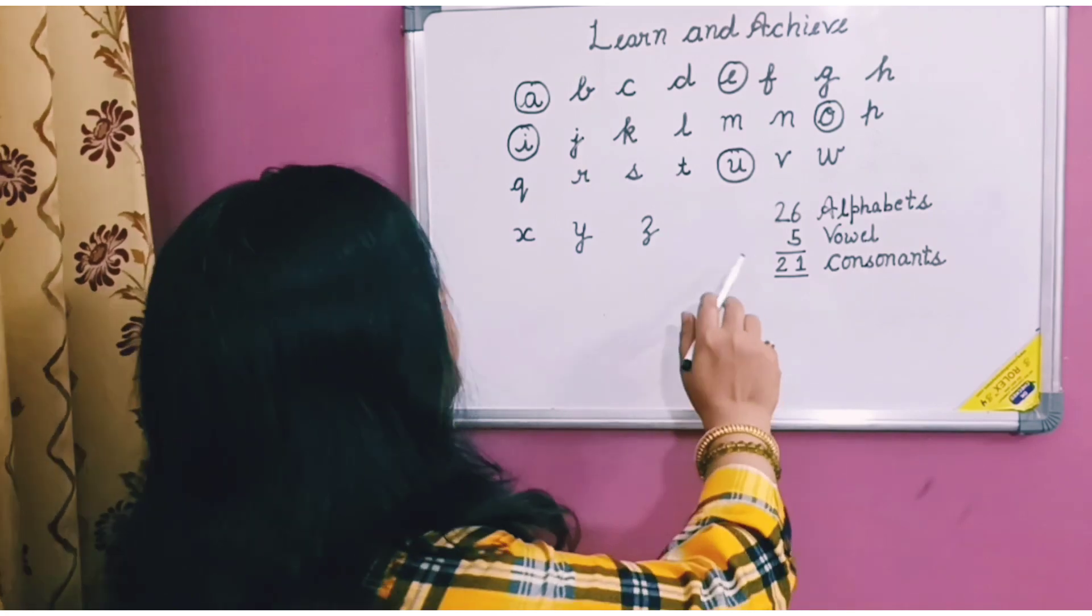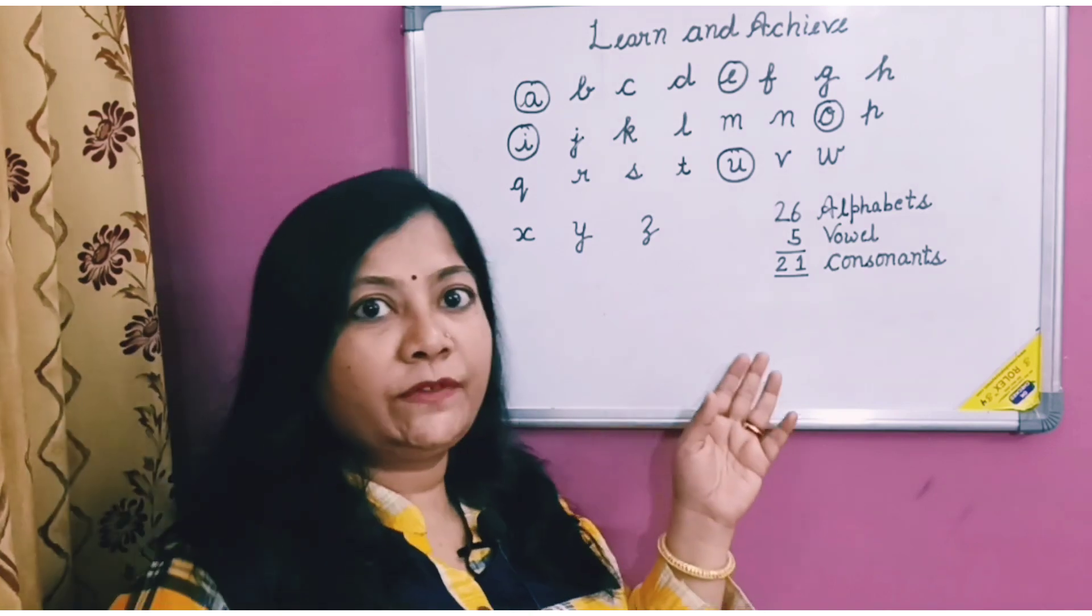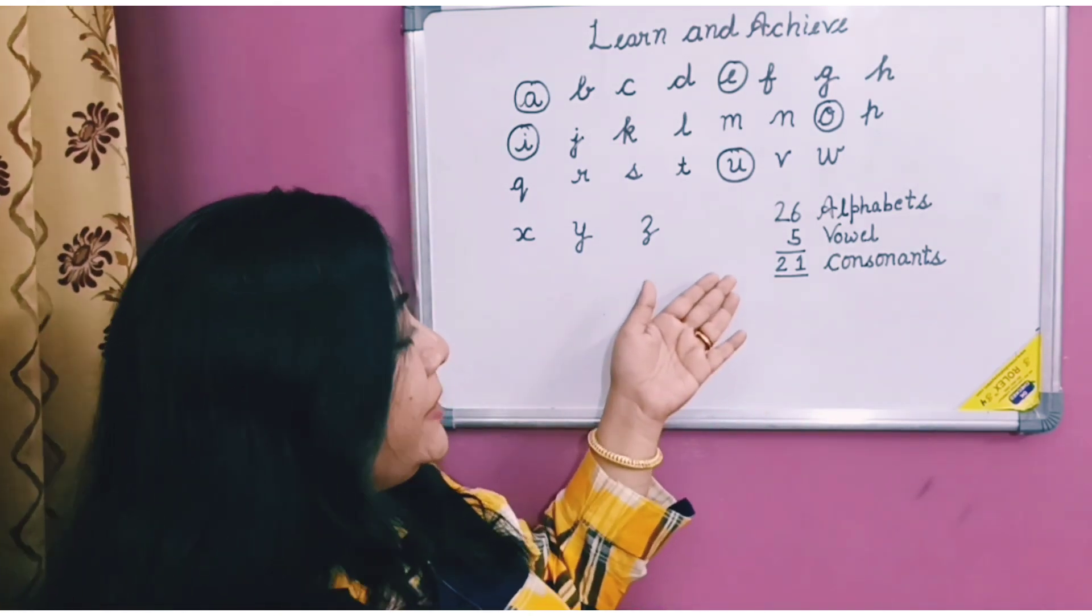Five are vowels: A, E, I, O, U. There are five vowels in English and twenty-one remaining are consonants.